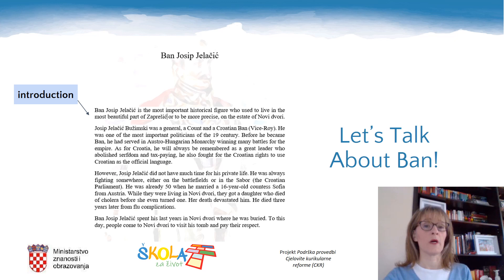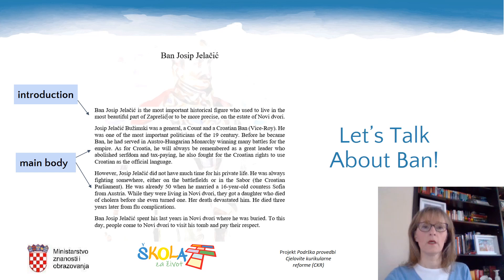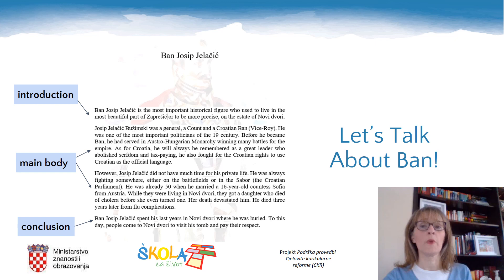Let's go back to the text about Ban Josip Jelačić and discuss its structure. It consists of three parts: an introduction, where we introduce the topic — in this case, we have connected Ban Josip Jelačić with Novi Dvori. The body, which in our case consists of two paragraphs: one about Ban's accomplishments and another about his personal life. And finally, the conclusion — the part where we wrap up the story about Ban and Novi Dvori.